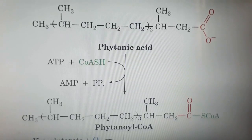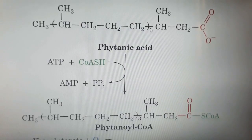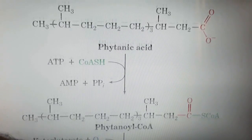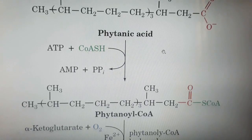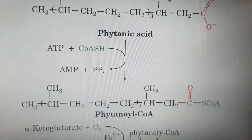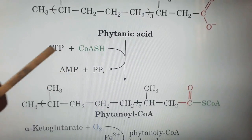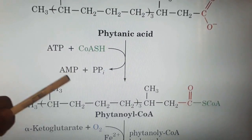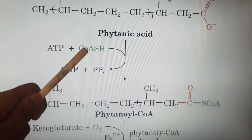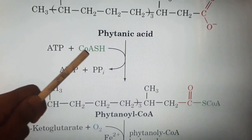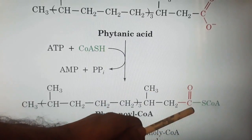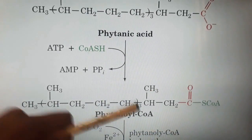Alpha oxidation of branched-chain fatty acids like phytanic acid takes place in the peroxisomes of the cells, in which the alpha carbon is oxidized. The first step is phytanic acid is converted into phytanyl-CoA by the use of ATP and coenzyme A. ATP is converted into AMP plus pyrophosphate, and coenzyme A is attached to the phytanic acid, giving the compound known as phytanyl-CoA.